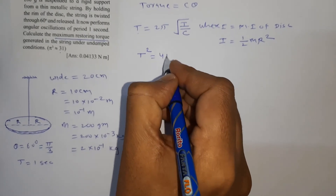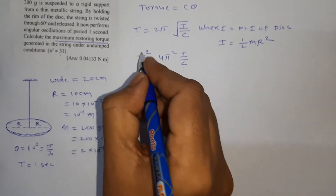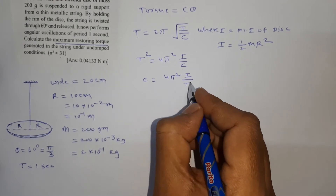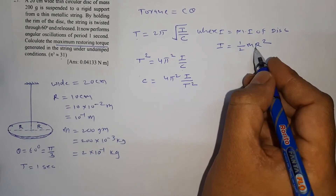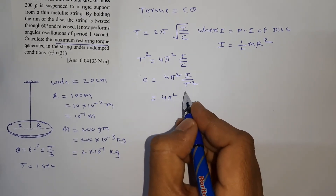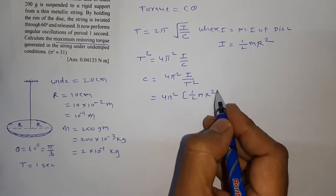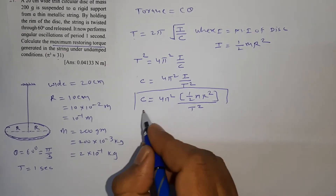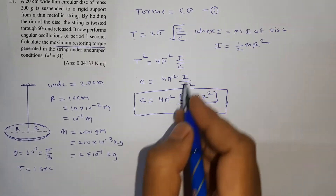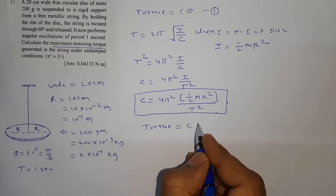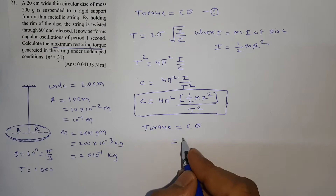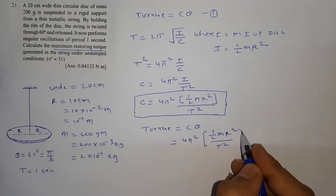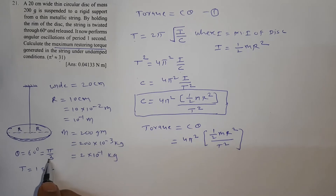Squaring both sides of the period formula: T² = 4π²(I/c), so c = 4π²I/T². Substituting I = ½mR², we get c = 4π² × (½mR²) / T². This is equation for c. The maximum torque is τ = cθ, and substituting c: τ = [4π² × ½mR² / T²] × θ, where θ = π/3.